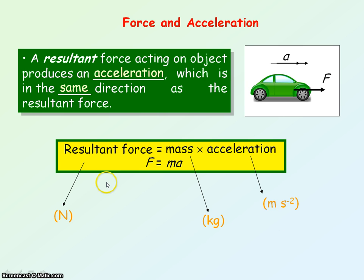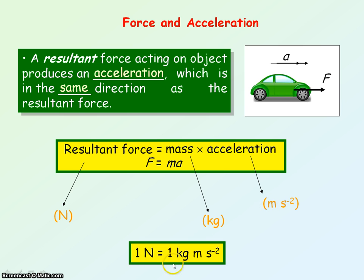We can use this equation to define the unit, the newton. One newton is equal to the unit of mass, which is kg, multiplied by the unit of acceleration, which is metres per second squared. So one newton equals one kg metres per second squared. One newton is then defined as the force that gives a mass of one kg an acceleration of one metre per second squared.